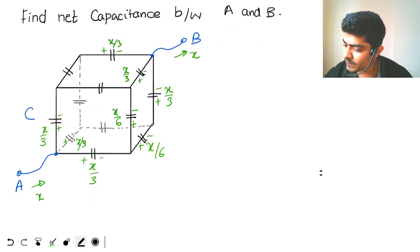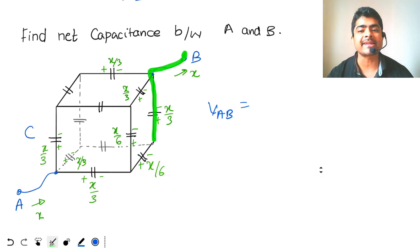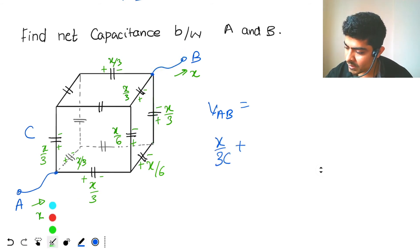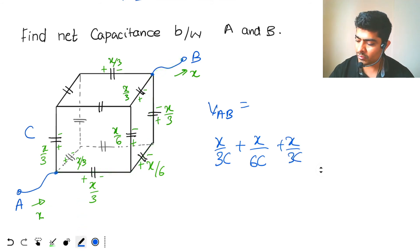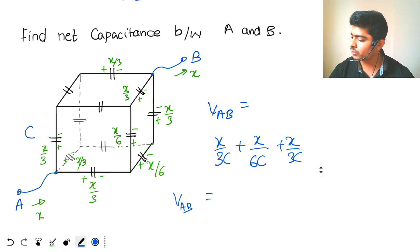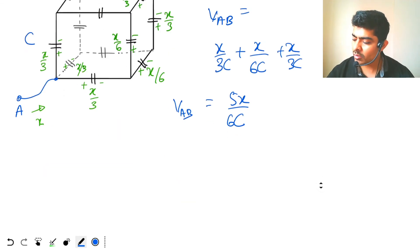What is the potential difference across A and B? V_ab: starting from B, for this capacitor I get plus x/3C, then plus x/6C, then plus x/3C, then plus x/6C, then again crossing this capacitor plus x/3C, reaching point A. So V_ab equals x/3C plus x/6C plus x/3C, which equals 5x/6C.